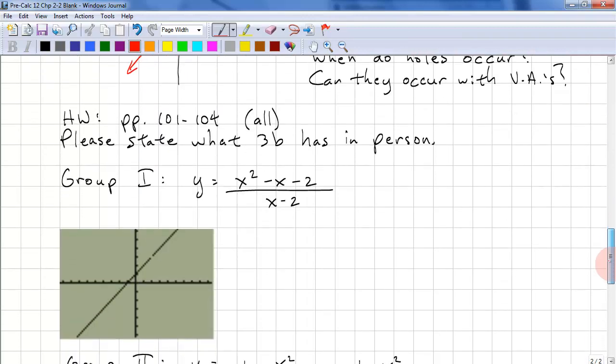Group 1 looks like this: y equals x squared minus x minus 2 over x minus 2. This is what you do with this factor: x minus 2, x plus 1, x minus 2. You have common factors and you can cancel them. Now we are left with x plus 1.